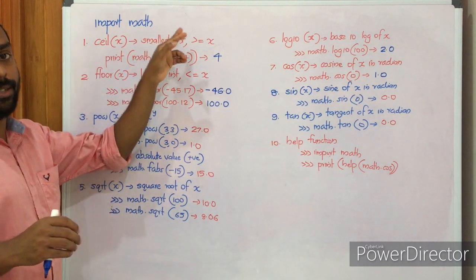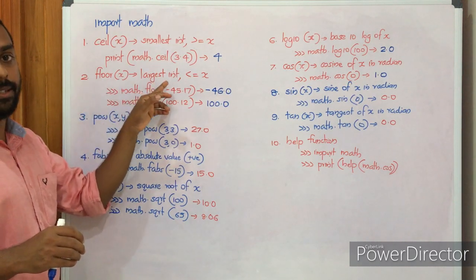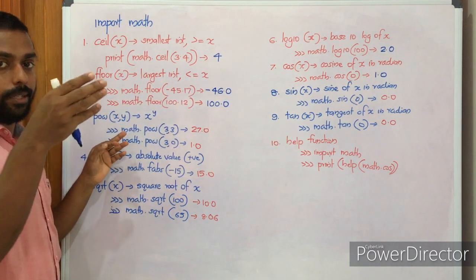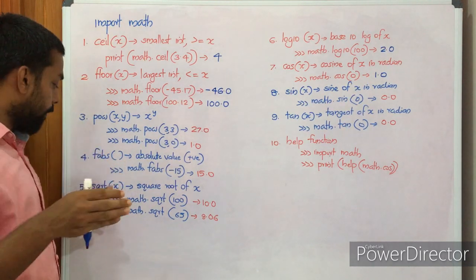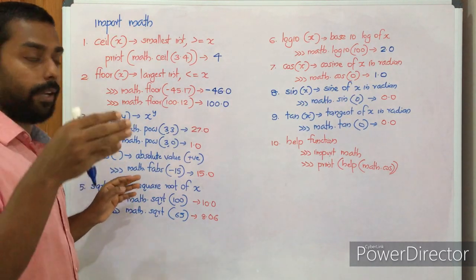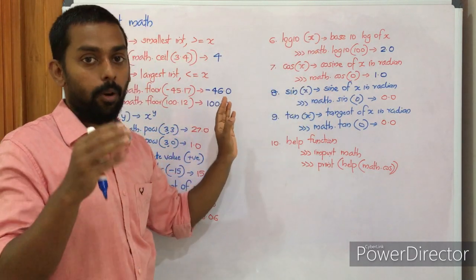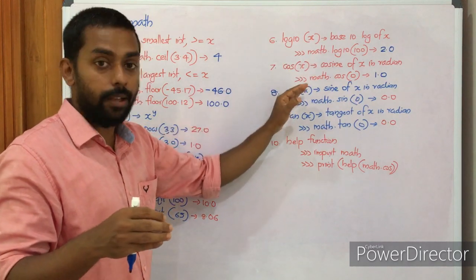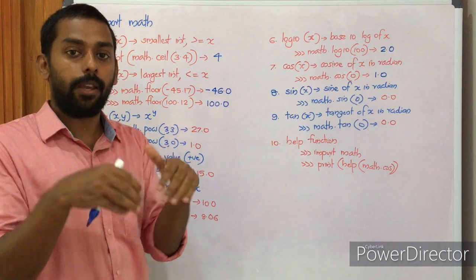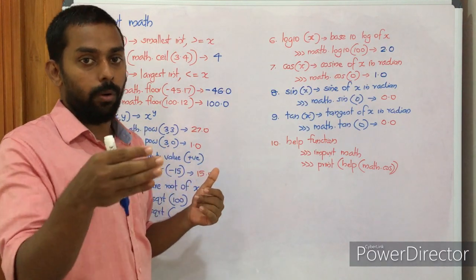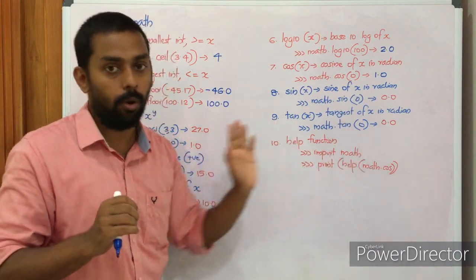To summarize the functions in the math module: ceil(x) returns the smallest integer greater than or equal to x; floor(x) returns the largest integer less than or equal to x; pow(x, y) returns x raised to y; fabs returns the floating point absolute value; sqrt returns the square root of x; log10 returns the base 10 log; cos, sin, and tan return the trigonometric values in radian. The help function lets you pass either a module or a function — for example, math.cos — to get more information.